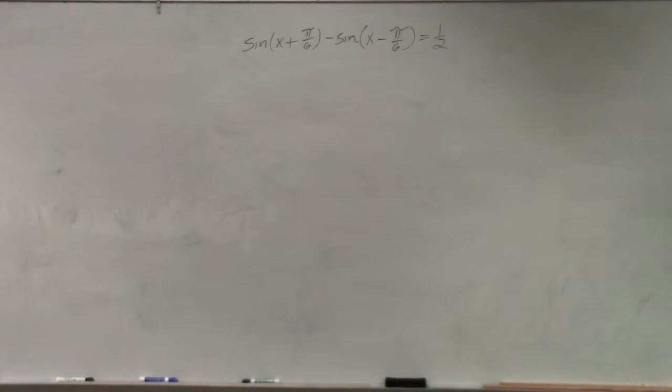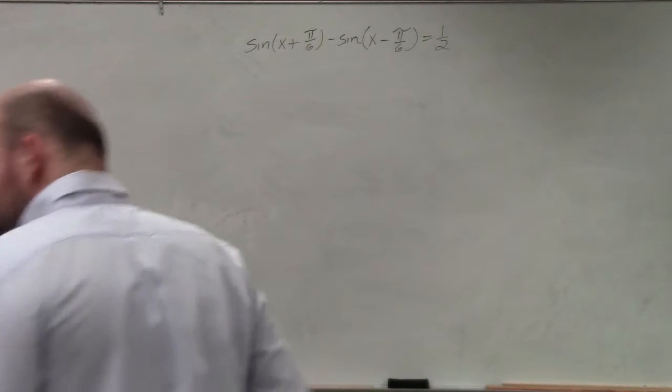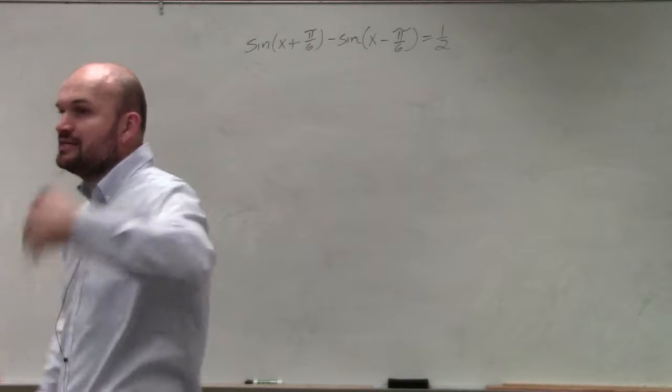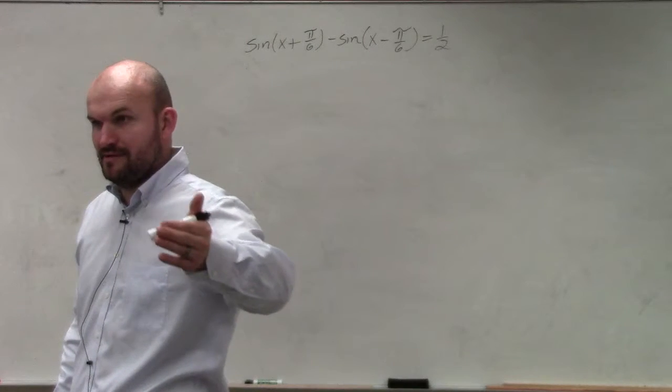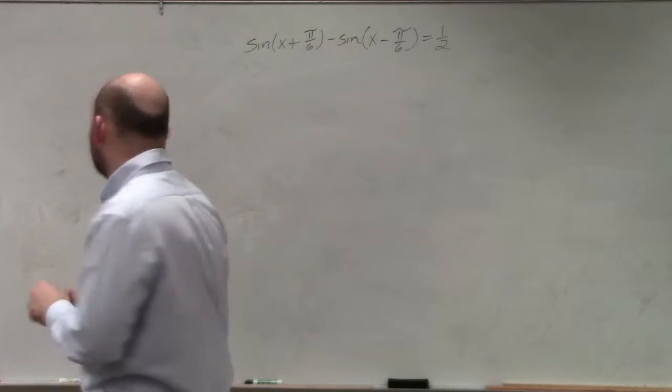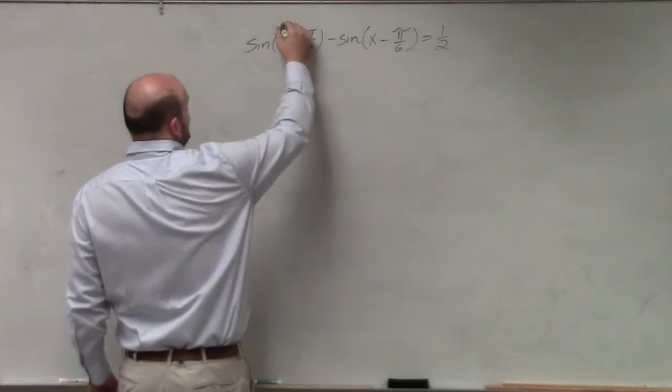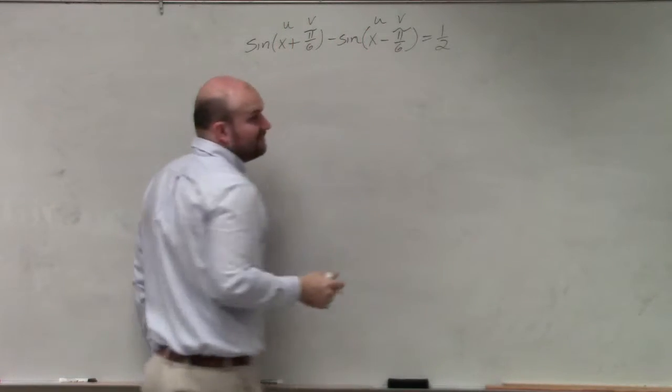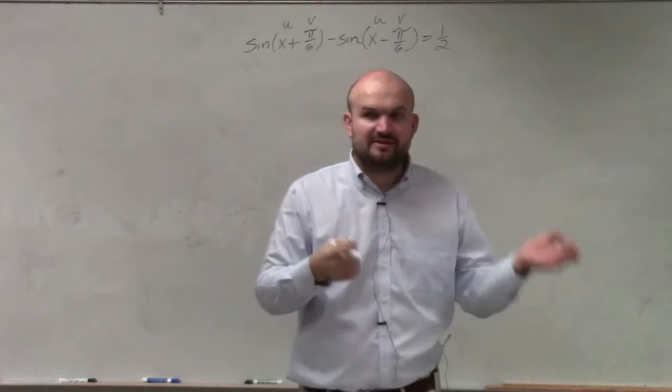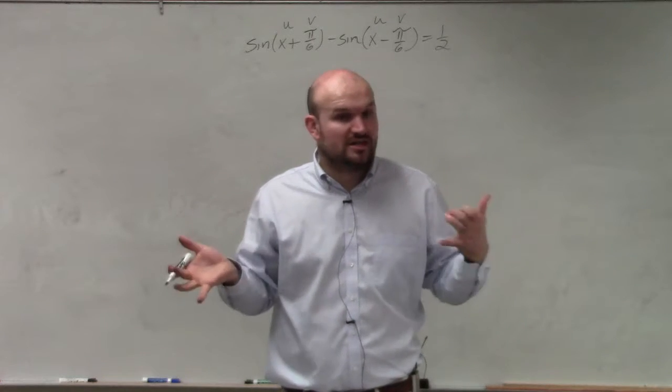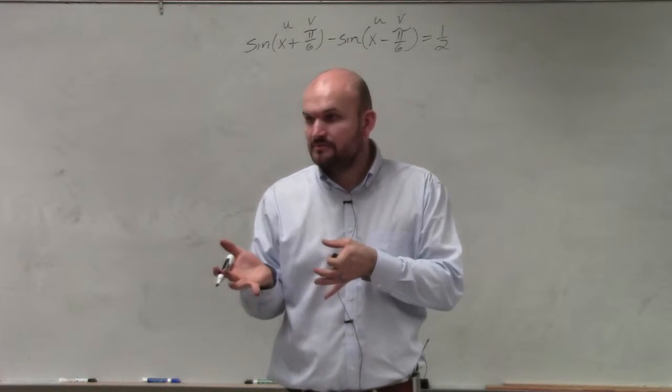When you see a trigonometric function of a sum or difference, just apply the formula. You can see here we have u and v. The only difference between them is we have an addition and subtraction, which tells me I need to use a different formula. Everybody agree with me?